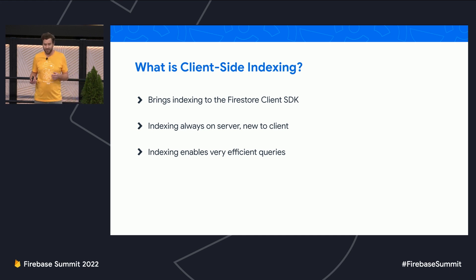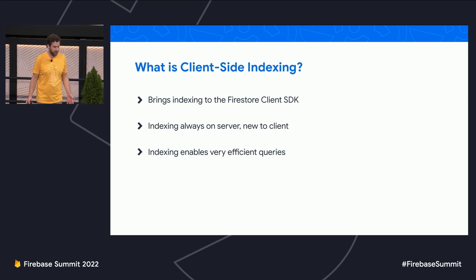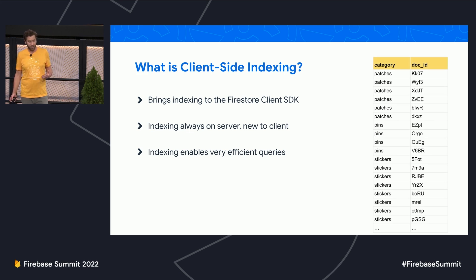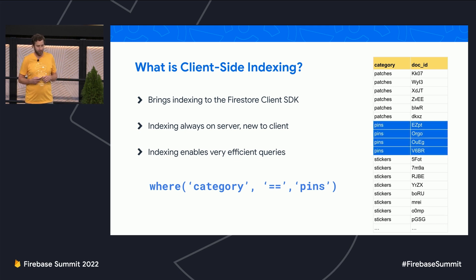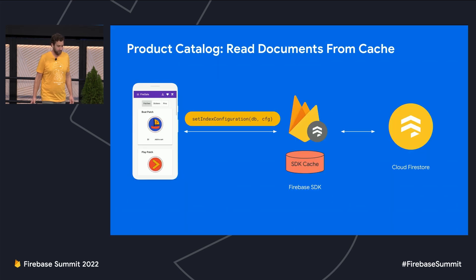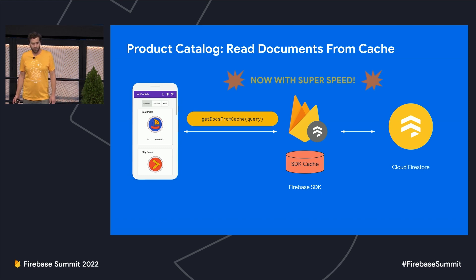What is client-side indexing? Client-side indexing simply brings indexing to the SDK. Indexing is always performed on all documents on all fields on the server, and it's new to the SDK. If you're not familiar with indexing, it's a mechanism the database uses to perform very efficient queries. For example, there's a table representing an index on the field 'category' — if I get a query like 'where category equals pins,' I can use this index to very quickly find all the documents where category equals pins. Indexing is automatically performed on the server, but in the SDK you have to configure it using setIndexConfiguration, passing in a configuration telling the SDK which fields to index. After that, when I query from cache using something like getDocsFromCache, it queries very efficiently.